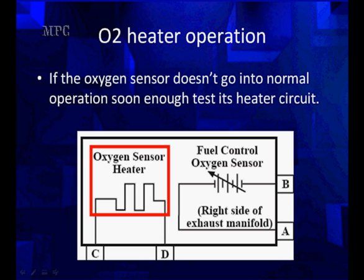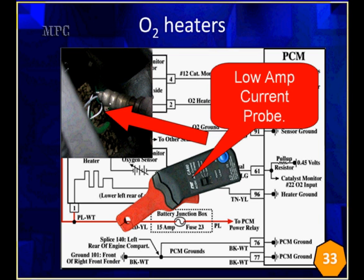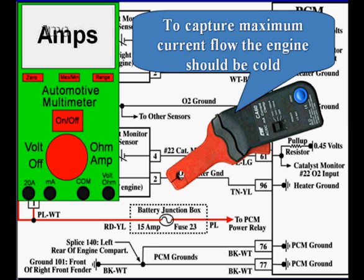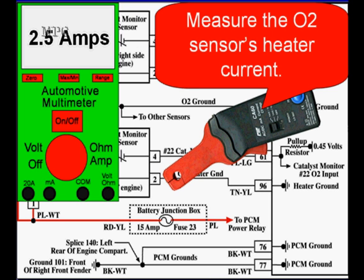O2 heater operation. If the oxygen sensor doesn't go into normal operation soon enough, test the heater circuits. You may also have a code and information in mode 6 telling you about that. Either way, we're going to see what we have to do to test it. Our method of testing it is to use a low amp air probe. As you can see here, we're looking at a purple and white wire and showing you where it is on the actual oxygen sensor itself. We're going to clamp around that wire. We can either use the positive side or we can use the ground side here. If you want to capture the maximum current flow, the engine should be cooled.